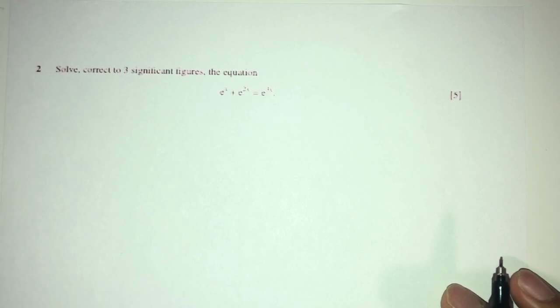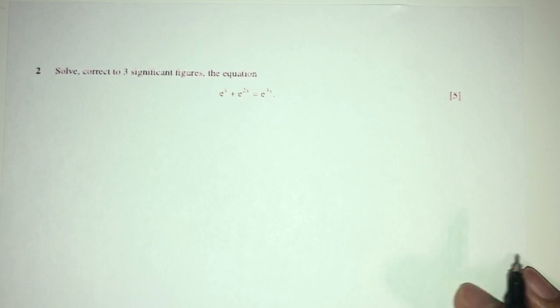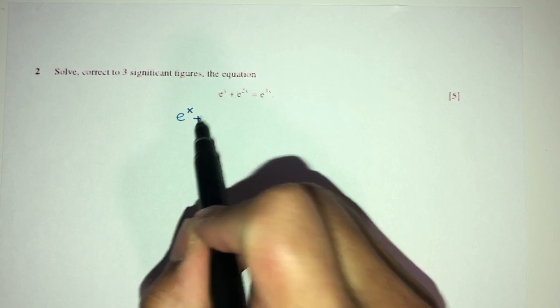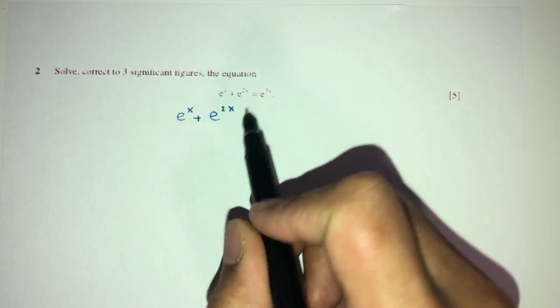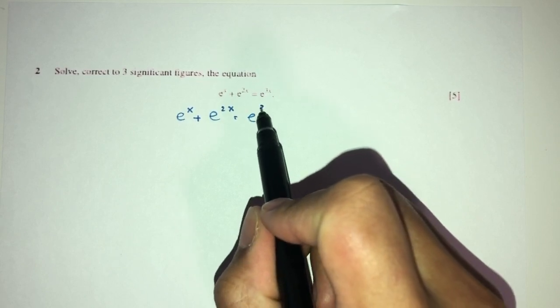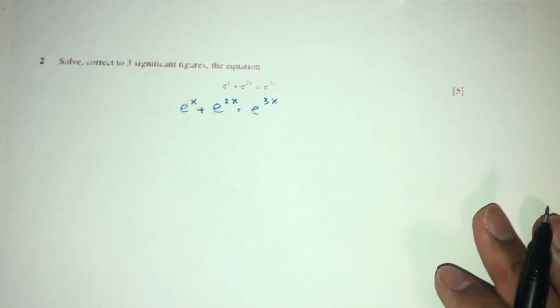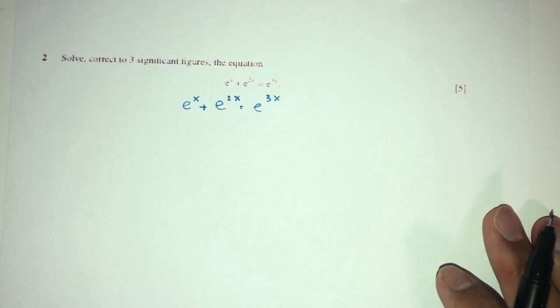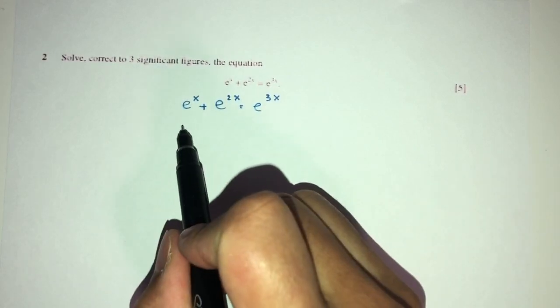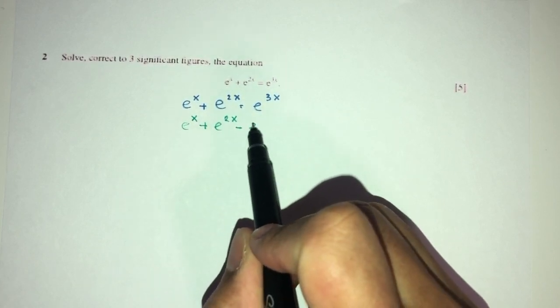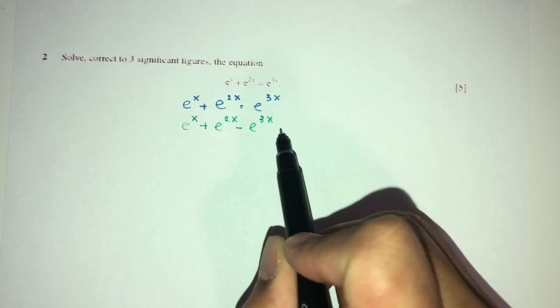Now, let's move on to question number 2. So, here we have to solve the equation, correct to 3 significant figures for the values of x. Here we have e^x + e^(2x) equal to e^(3x). So, how can we solve this? Let's see step by step. Let's send everything to one side first. You will have e^x + e^(2x) - e^(3x) is equal to 0.